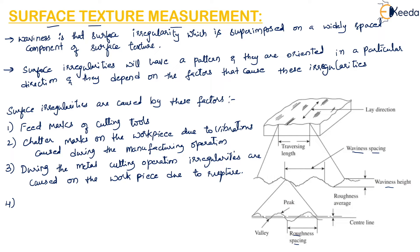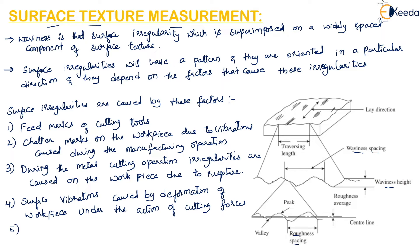The fourth cause for irregularities is surface vibrations caused by deformation of the workpiece under the action of cutting forces. The fifth cause is irregularities in the machine tool itself, such as lack of straightness of guideways. If there are irregularities in the machine being used, they will cause irregularities on the workpiece as well.